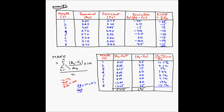We have calculated the absolute percent error for each time period. Now we take the sum of all these values, which comes out to 81.3%. Next we take the average — 81.3 divided by 8, since n is 8 — which gives 10.16%. This indicates that on average the forecast error was about 10% of the actual demand at the same time period.